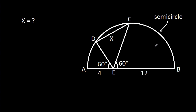In this video, we have been given a semicircle in which AE is 4, BE is 12, angle AED is 60 degrees, angle BEC is 60 degrees, and CD is X. We have to find X.